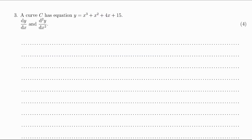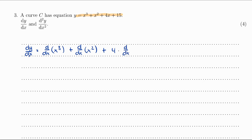Question 3. A curve C has equation y equals x cubed plus x² plus 4x plus 15. We have to find the first derivative dy/dx and the second derivative d²y/dx². To find dy/dx, this equals the derivative of x cubed plus the derivative of x² plus 4 multiplied by the derivative of x, and the derivative of the constant 15 is 0.